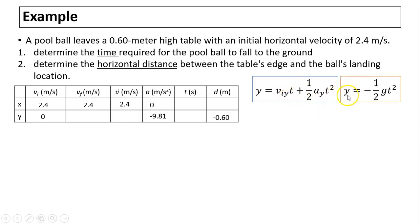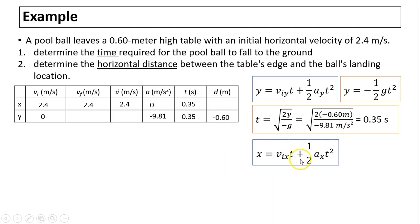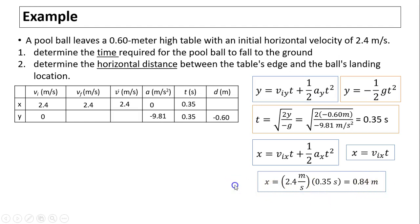Since Viy equals zero, the equation simplifies to y equals negative one-half g t squared. Solving for t: t equals the square root of 2y divided by negative g. Substituting the numbers gives t equals 0.35 seconds. Now to find horizontal distance, since Ax equals zero, the equation simplifies to x equals Vix times t. So x equals 0.84 meters.